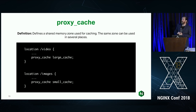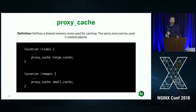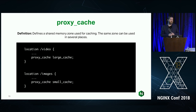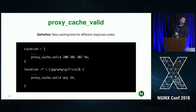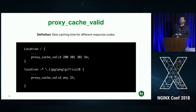Then all you have to do is reference that in a location block. Because NGINX is regex-based and all location matching uses regular expressions, you can have individual caches for individual parts of your application or services. Maybe you want to cache video and reference the large cache, or cache images and reference the small cache. You also need to tell NGINX how to behave with the cache response — define exactly what status codes you want cached and for how long. For example, cache 200s, 301s, and 302s for five minutes, but pictures for an hour.